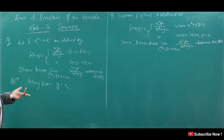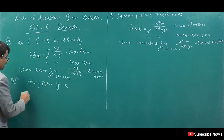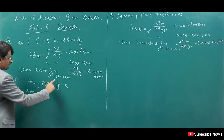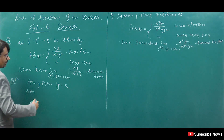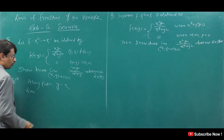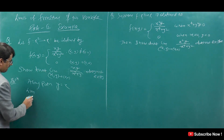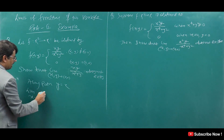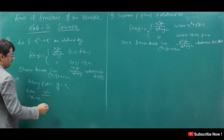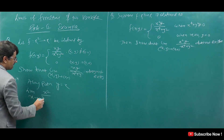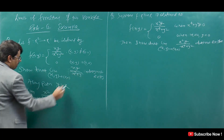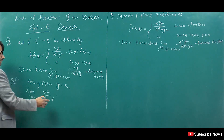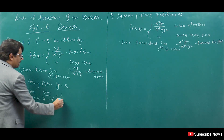Along path y = x, substituting y = x, as x tends to 0 we get x·x/(x² + x²) = x²/(2x²) = 1/2. So along the path y = x, the limit is 1/2.